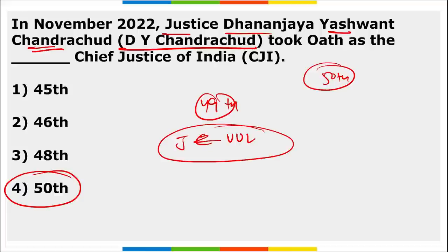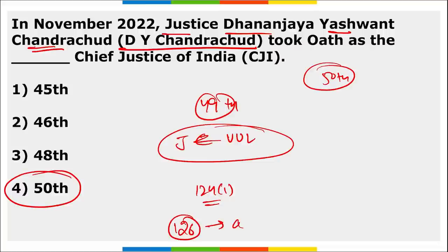The Constitution of India — Article 124(1) — states that there shall be a Supreme Court of India consisting of the Chief Justice of India. For the appointment of an acting Chief Justice of India, the relevant article is Article 126.